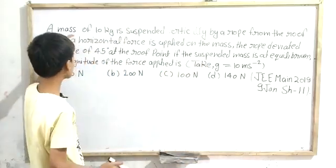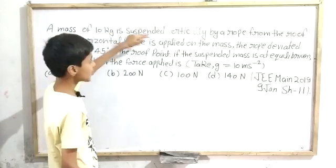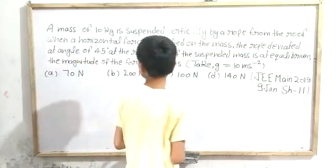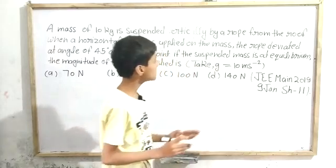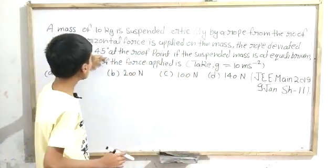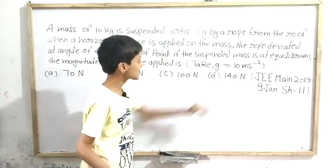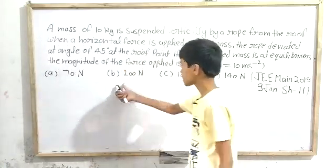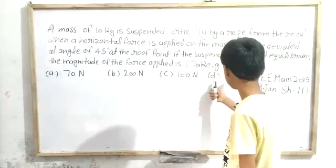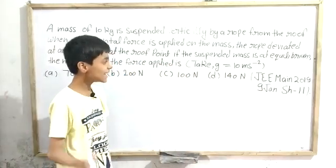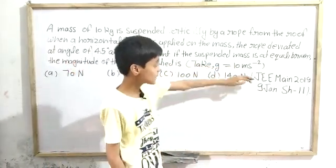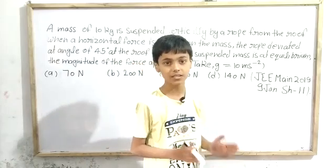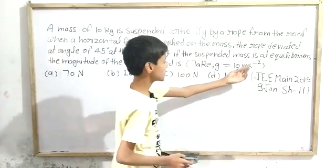Our question states: a mass of 10 kg is suspended vertically by a rope from the roof. When a horizontal force is applied on the mass, the rope deviates at an angle of 45 degrees at the roof point. If the suspended mass is at equilibrium, the magnitude of the force applied is: Option A — 70 N, Option B — 200 N, Option C — 100 N, Option D — 140 N. It is given that g equals 10 meters per second squared.